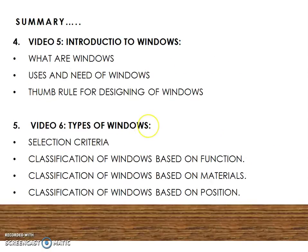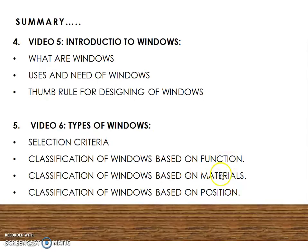We have also discussed about windows. In video 5, we learned about what are windows, their uses and the need for windows, and the thumb rule for designing of windows. In video 6, we discussed about the types of windows — the selection criteria, and classification based on function, based on materials, as well as windows based on positions.